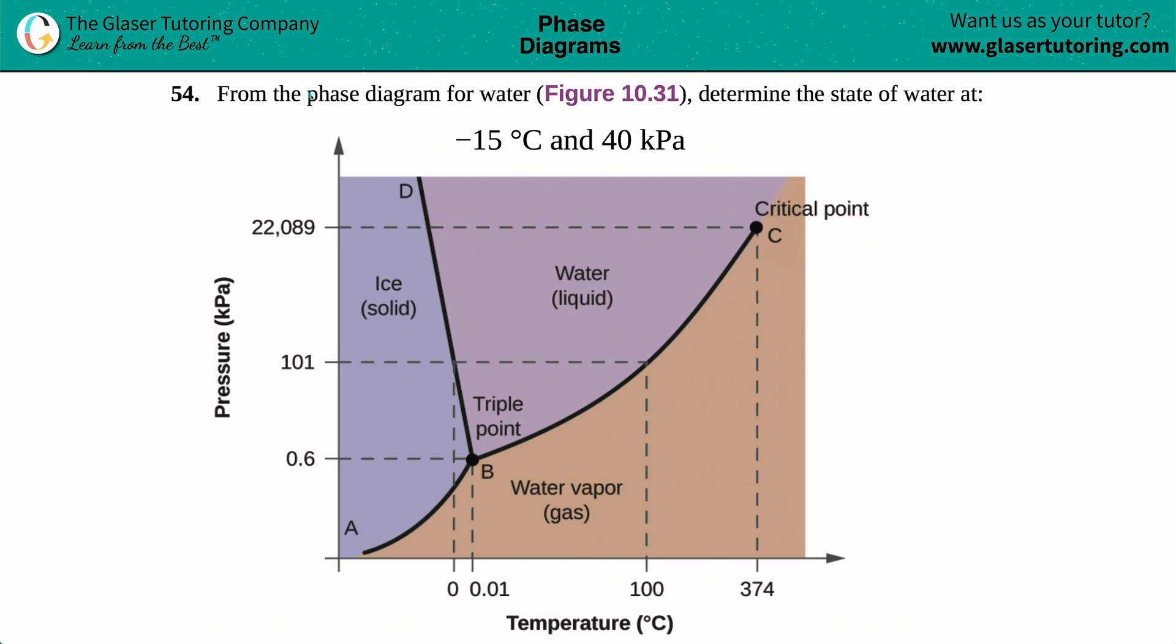Number 54. From the phase diagram for water, figure 10.31, determine the state of water at negative 15 degrees Celsius and 40 kilopascals.